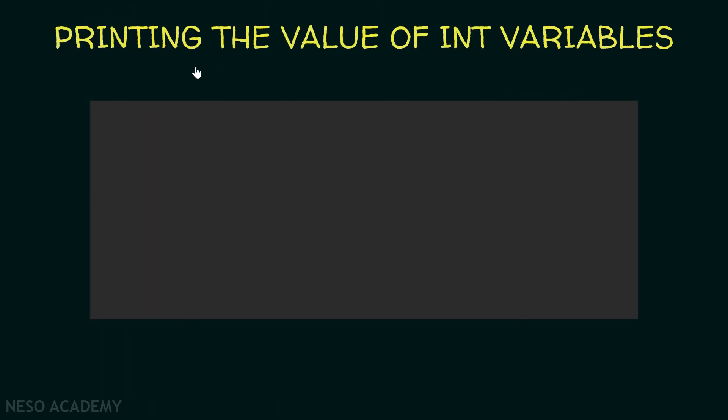So let's see how we can print the value of an int variable. Suppose that we have these two variables of type integer. i1 is equal to 5 and i2 is equal to 10. We can simply use the println function to print the value of i1, for example. So this will print 5.